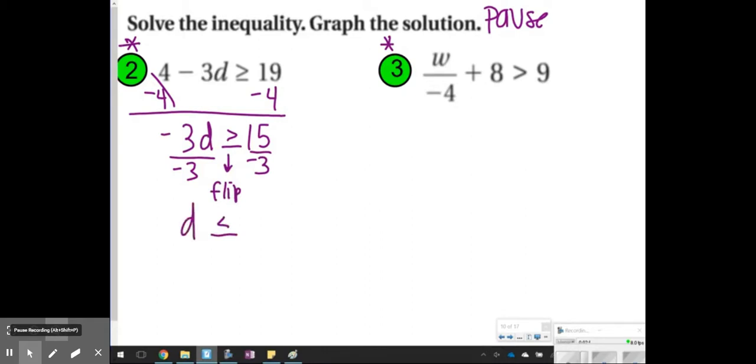So I'm going to have d is less than or equal to negative 5. My graph will be a closed circle pointing to the left.